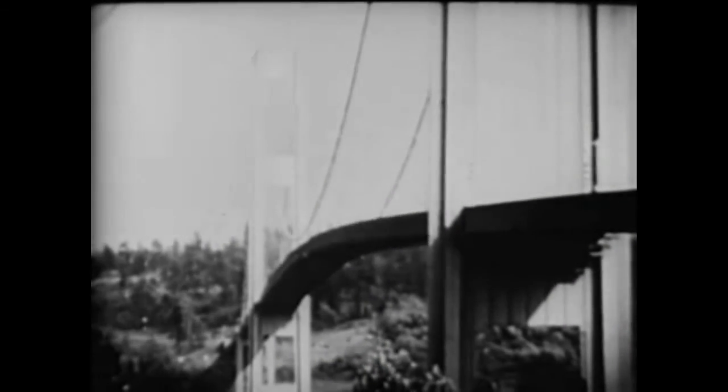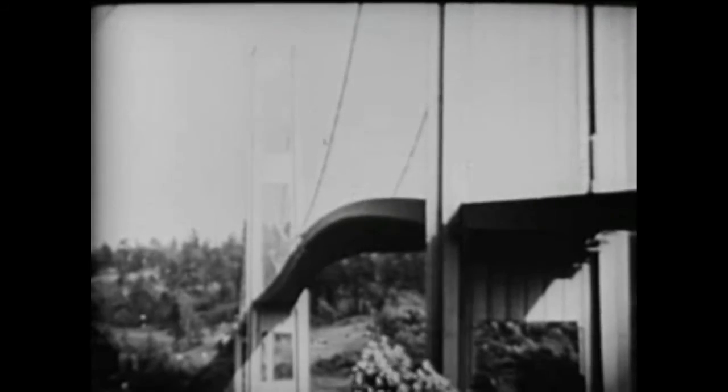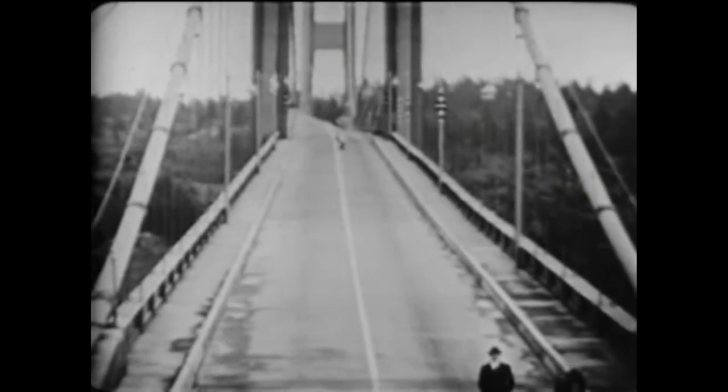Now you can test your understanding of standing waves by answering these questions. This man escaped from the Tacoma Narrows Bridge collapse by walking on which part of the standing wave? Also, if you were going to rebuild this bridge, which part would you want to reinforce? Which part of the standing wave would need to stop moving so the bridge would not collapse?